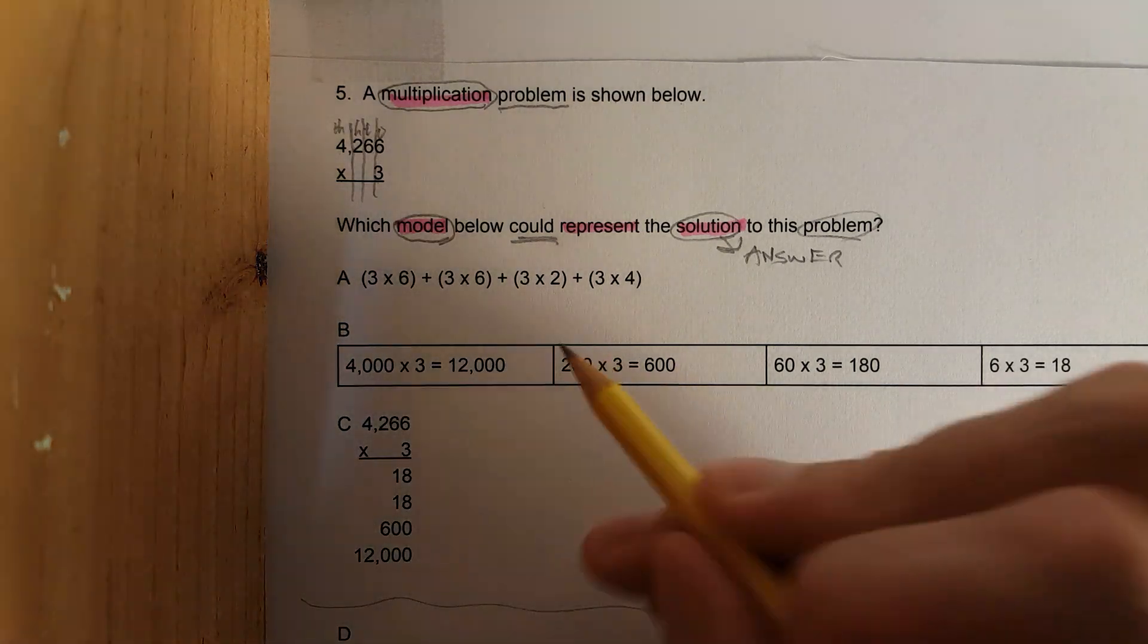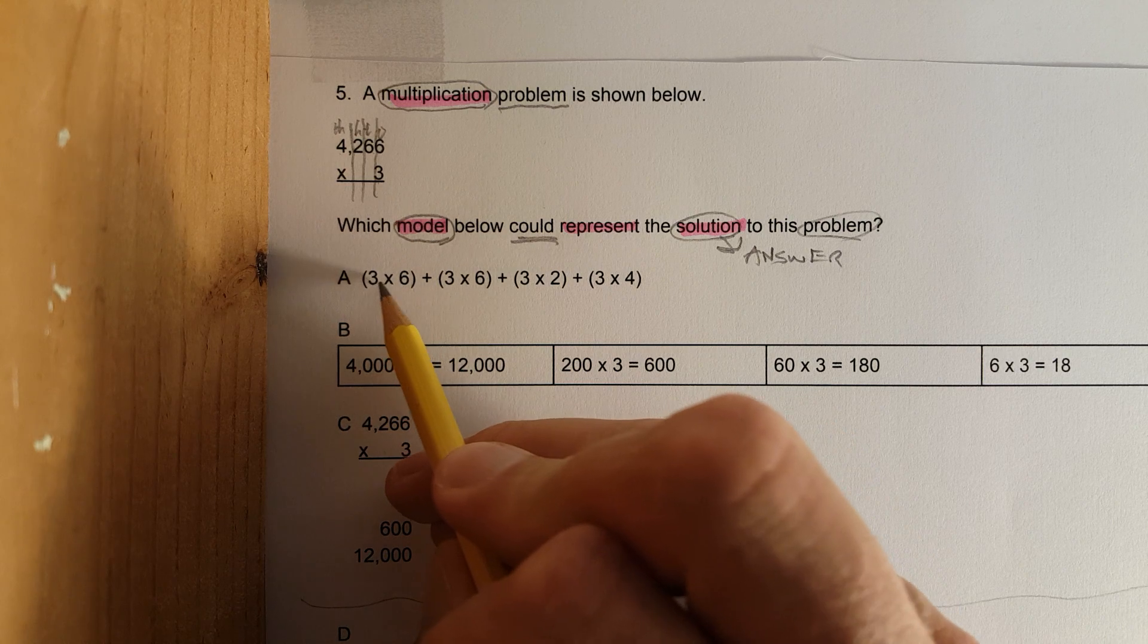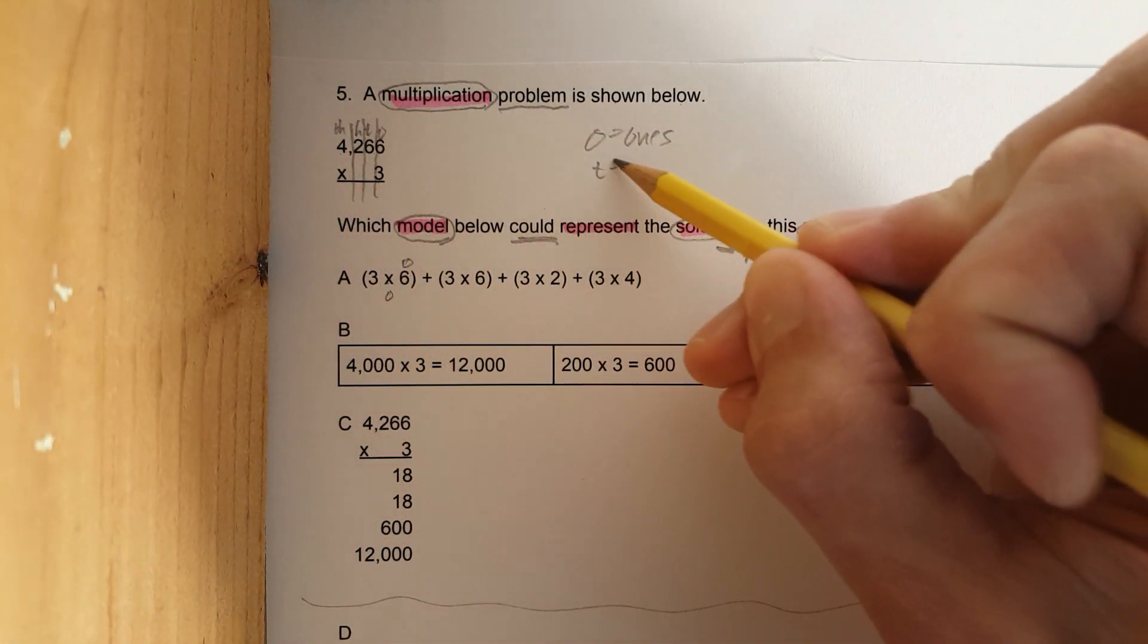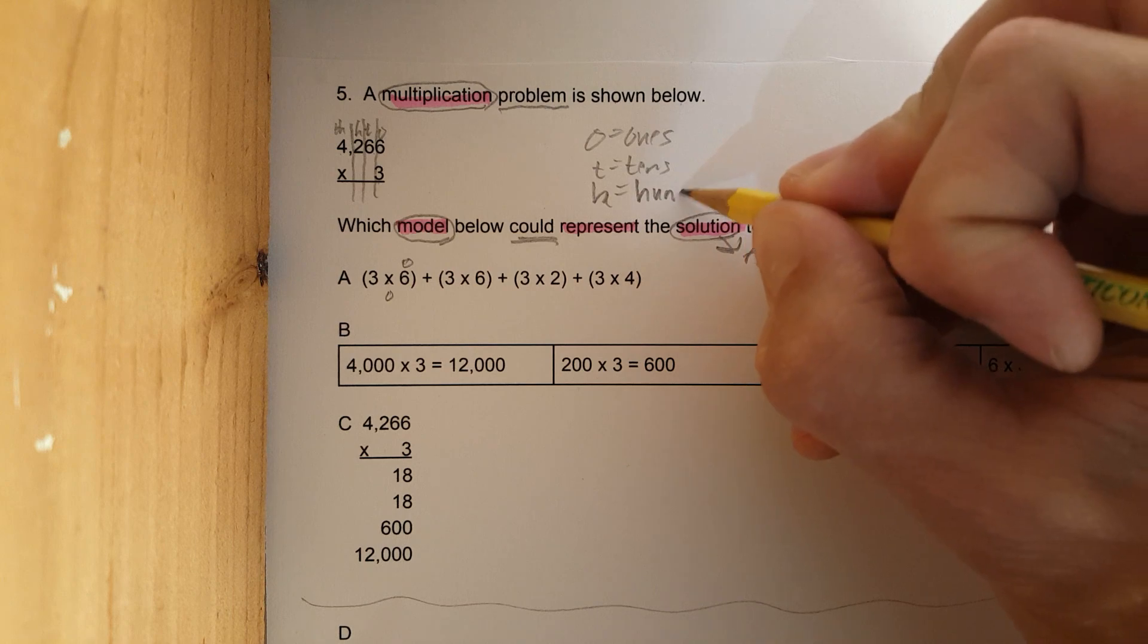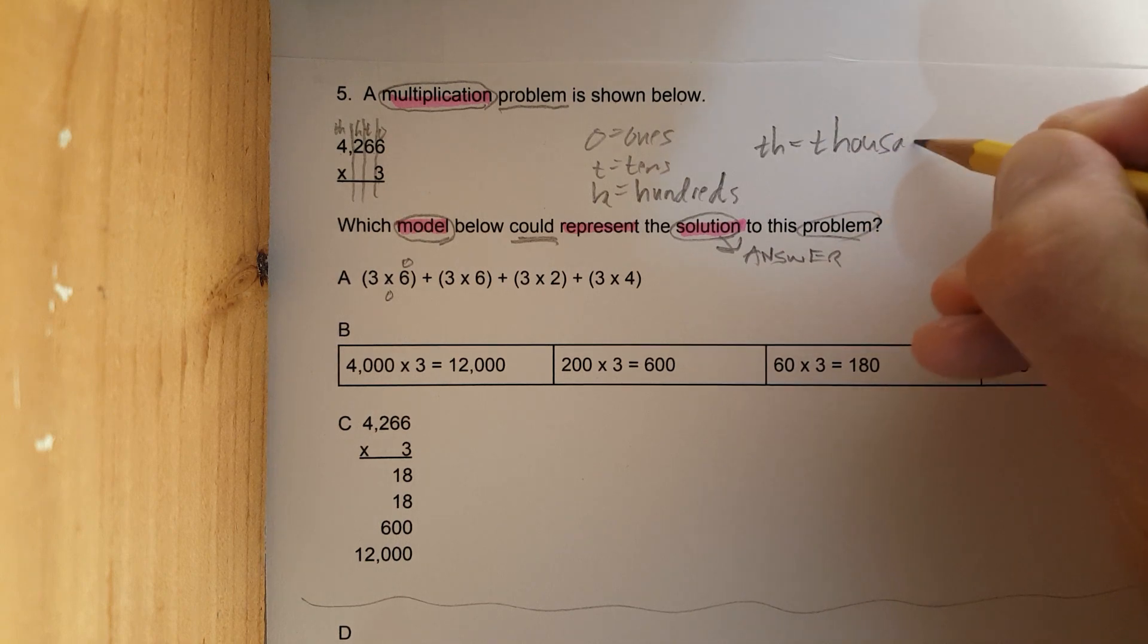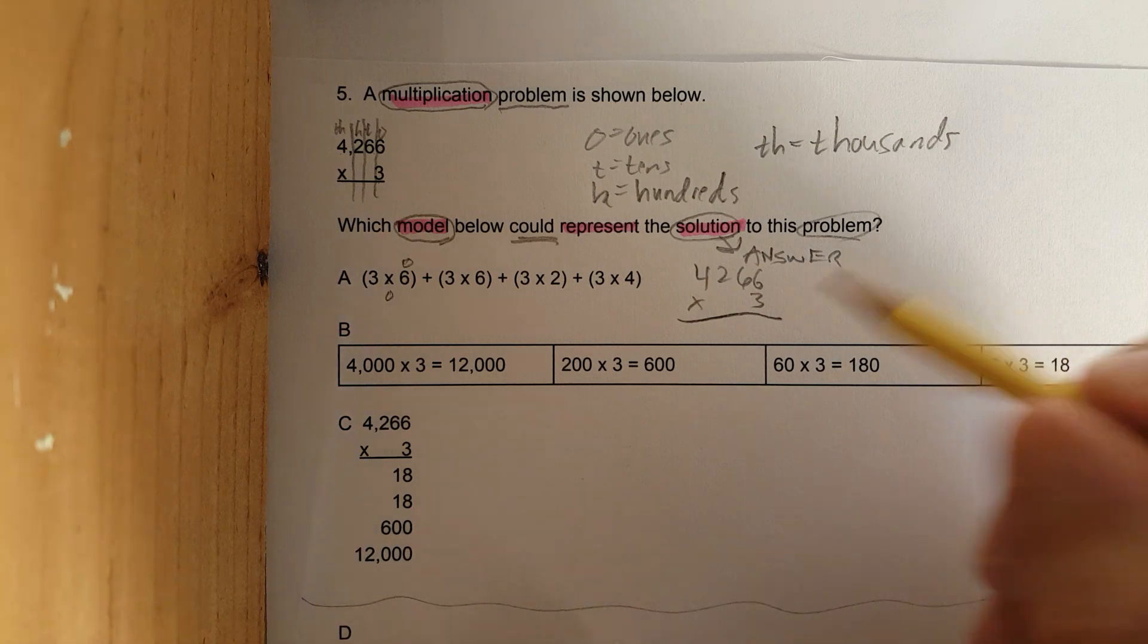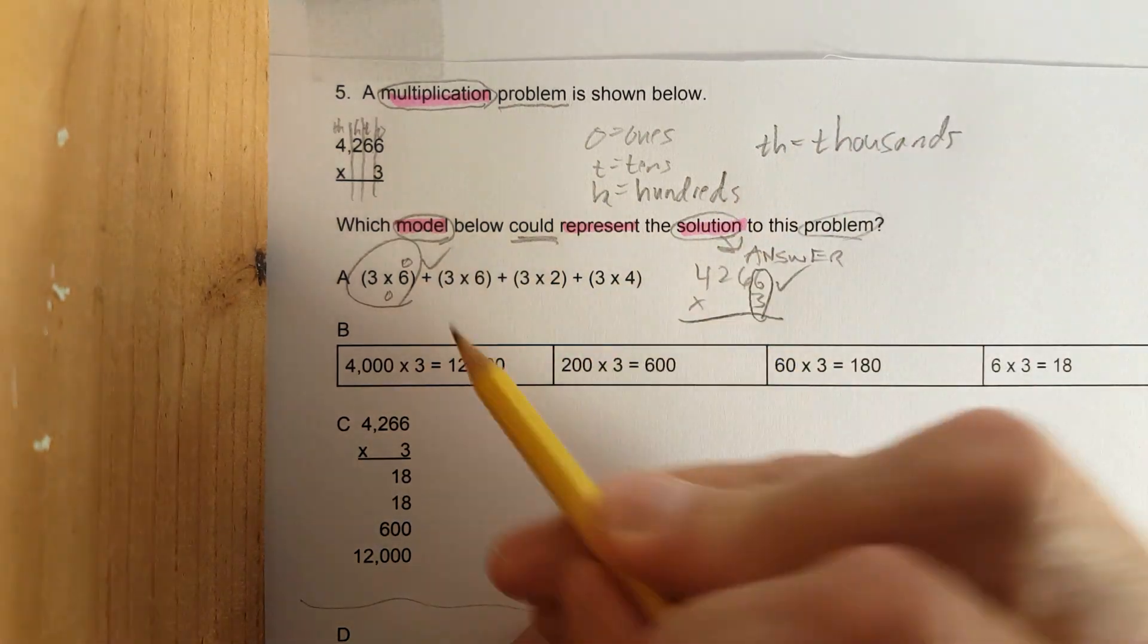Let's go. This one is distributive multiplication property. Let's check this out. Three times six - this is the ones place first. Remember: O equals ones, T equals tens, H equals hundreds, TH equals thousands. They're doing the ones place first. I'm gonna bring the problem down here so I can annotate and mark a little better. They're doing this one right here - that works.